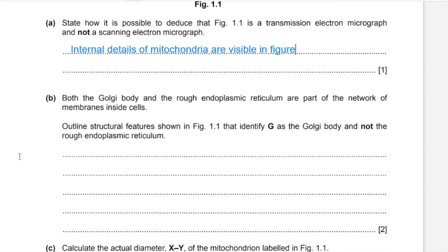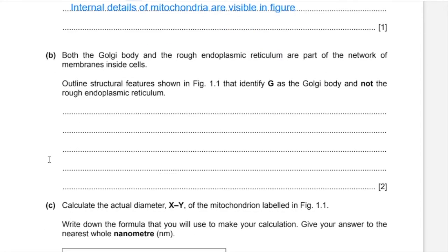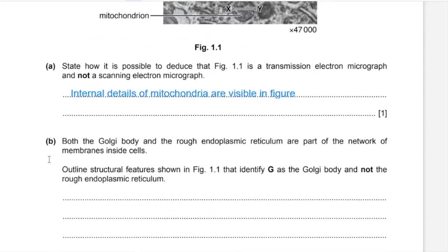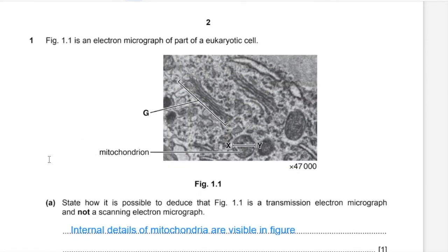Part B. Both Golgi body and rough endoplasmic reticulum are part of the network of membranes inside cells. Outline structural features shown in figure 1.1 that identify G as Golgi body and not the rough endoplasmic reticulum.